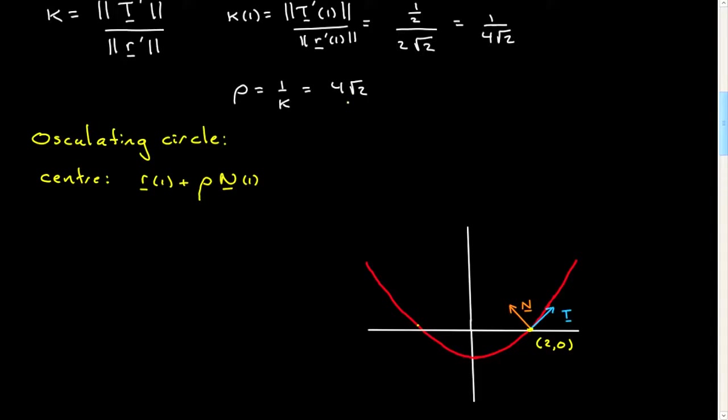Now, rho happens to have a very convenient value. It's 4 root 2.